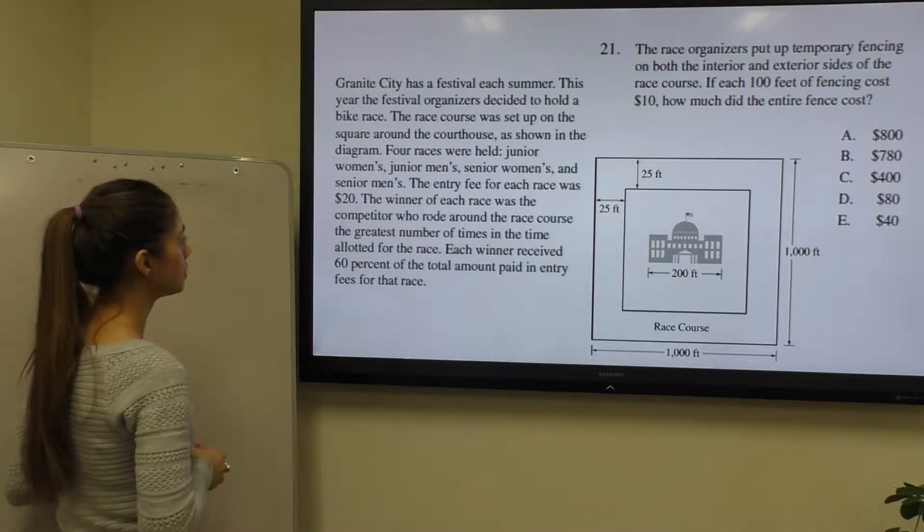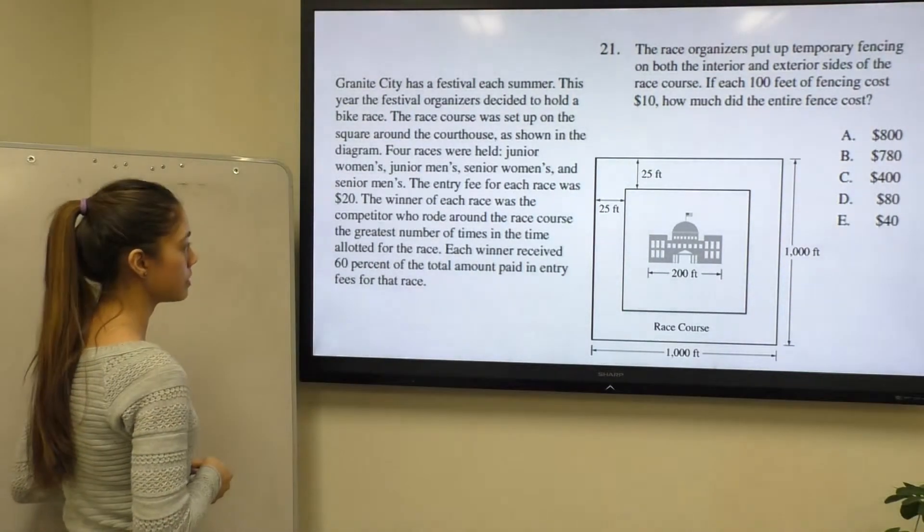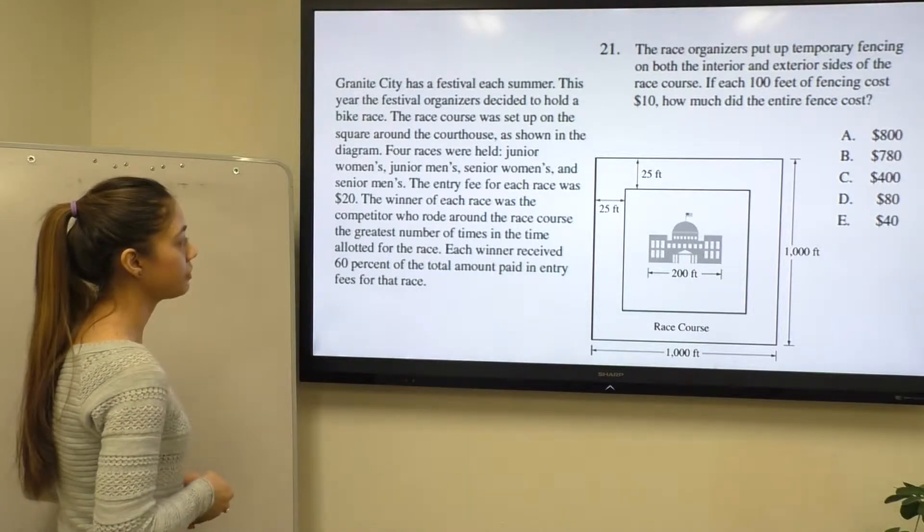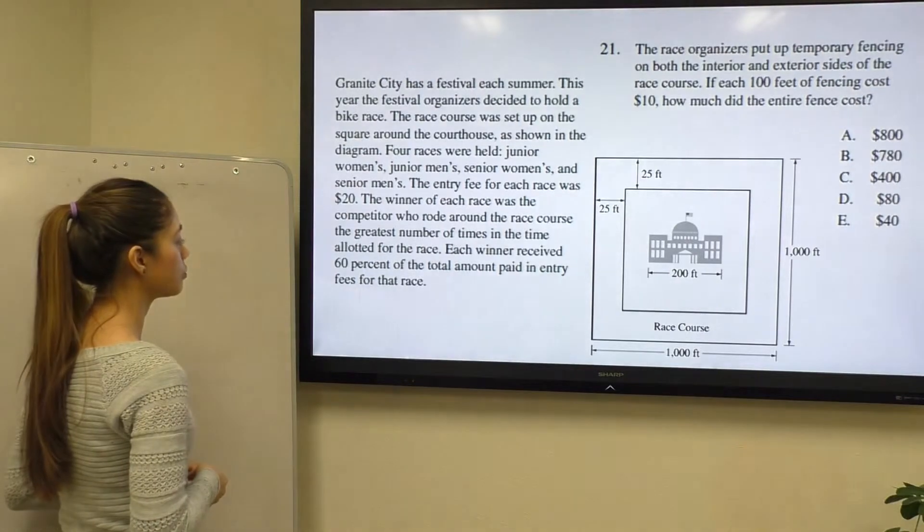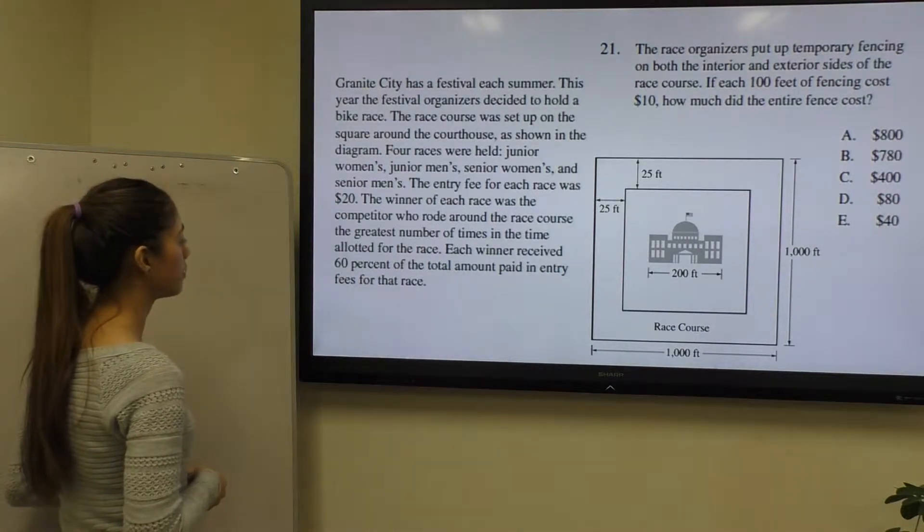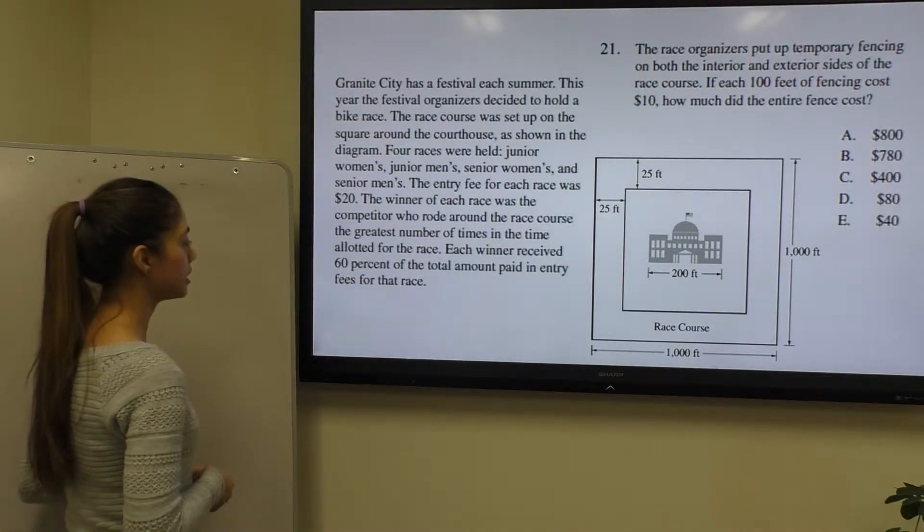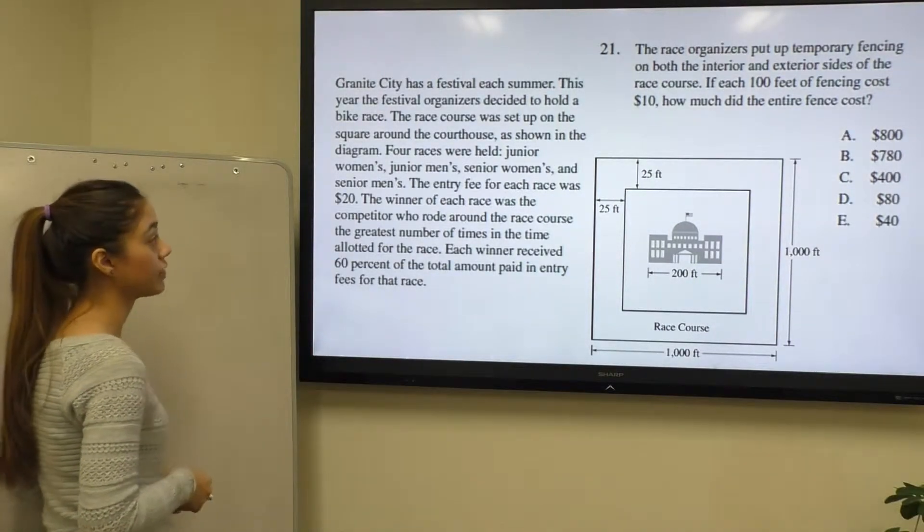Four races were held: junior women's, junior men's, senior women's, and senior men's. The entry fee for each race was $20. The winner of each race was a competitor who rode around the race course the greatest number of times in the time allotted for the race. Each winner receives 60% of the total amount paid in entry fees for that race.